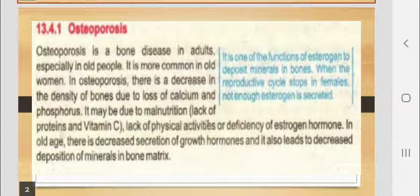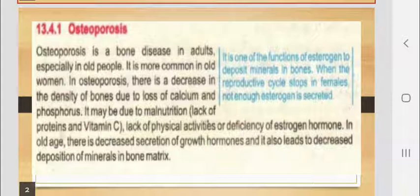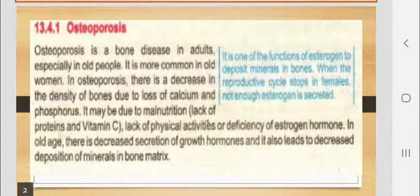The diseases that are associated with your skeletal system are known as disorders of the skeletal system. Number one is osteoporosis. It is a bone disease in adults, especially in old people. It is most often common in old women. In osteoporosis, there is a decrease in the density of bones due to loss of calcium and phosphorus. It may be due to malnourishment.